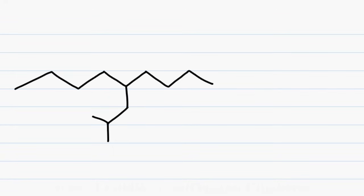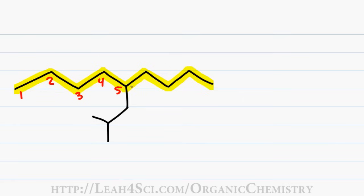We'll use this molecule as our first example. We name the branched substituent using the same rules introduced in the first video. First, we identify the parent chain — the longest carbon chain — highlight and number it. With 4 carbons from the right and 4 from the left, I have a total of 9 carbons, giving a first name of 'non' and only single bonds giving a last name of 'ane.'